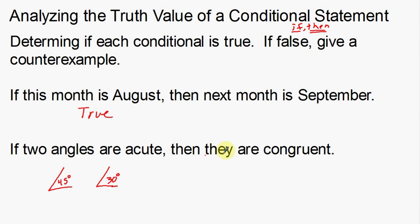If two angles are acute, then they are congruent. Well, wait a second. These two angles - congruent means that they're the same measure, the same size. But these aren't the same measure. These are 45 and 30. Well, that's not true.